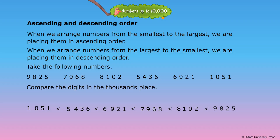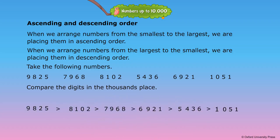To arrange in descending order, we just reverse the order from the greatest to the smallest. 9,825 is greater than 8,102 is greater than 7,968 is greater than 6,921 is greater than 5,436 is greater than 1,051.